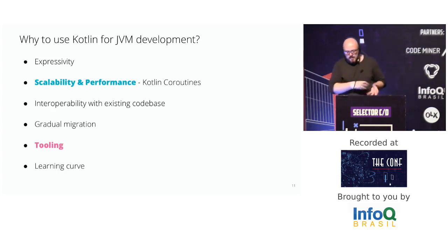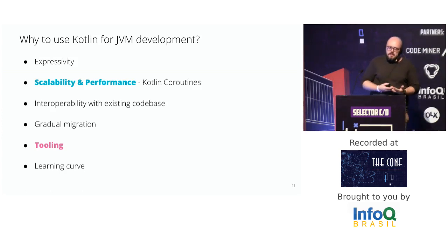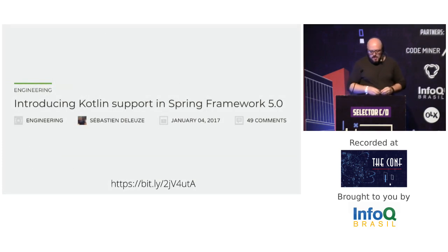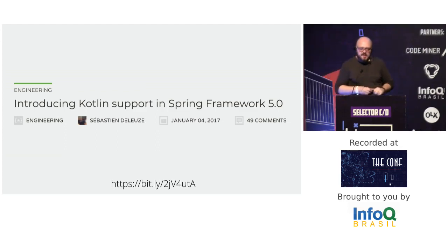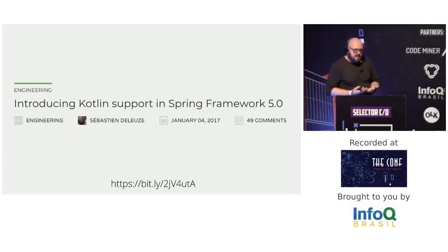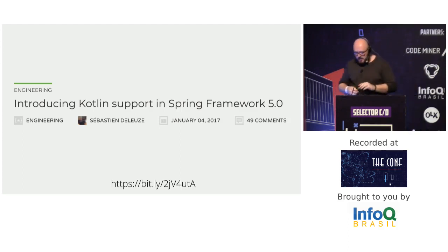Gradual migration and learning curve on the JVM are the same benefits as with Android. As a language developed by JetBrains, you can expect great IDE and tooling support — and this has been true since the first pre-release version. One example of Kotlin support is the Spring framework: starting with version 5.0, Spring added first-class support for Kotlin, adding nullability data to method signatures so you can safely call them from Kotlin, and includes DSLs for bean configuration.